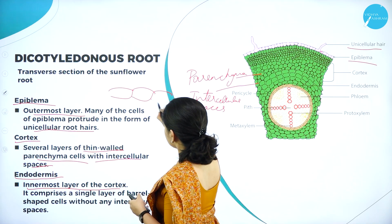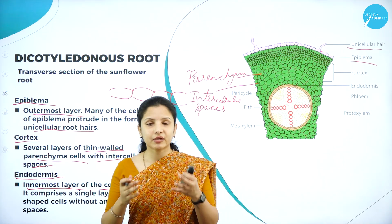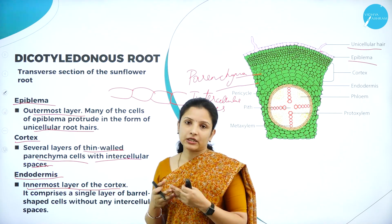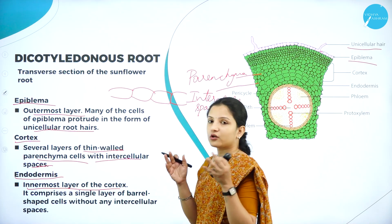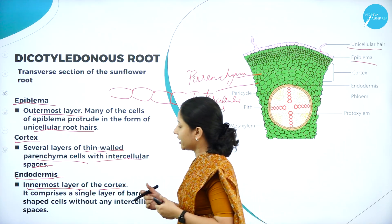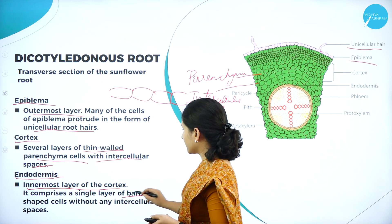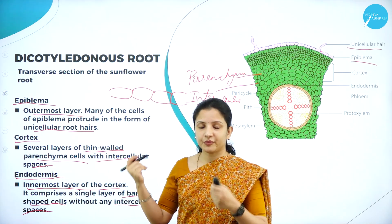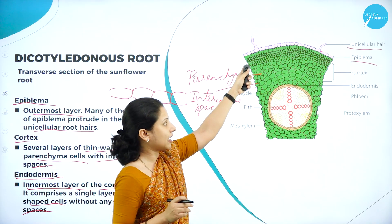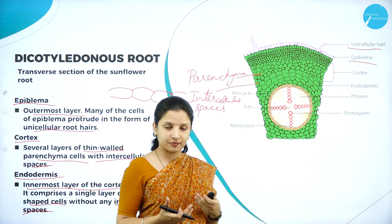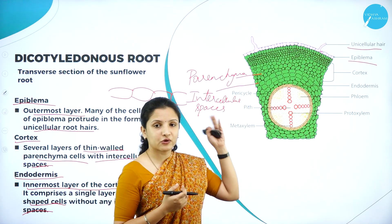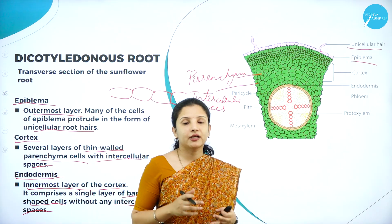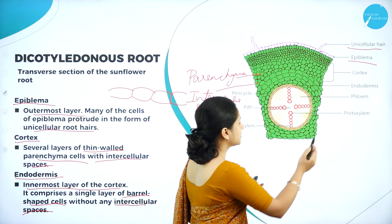The endodermis cells are barrel-shaped — like a barrel, the drum-like structure used to preserve wine. They are called barrel-shaped cells because of this resemblance. The endodermis comprises a single layer of barrel-shaped cells with no intercellular spaces. Similarly, the epiblema was also made up of a single layer of barrel-shaped cells without intercellular spaces, with the difference that the epiblema had protruding root hairs. Likewise, the endodermis is also single-layered, barrel-shaped, and without intercellular spaces.